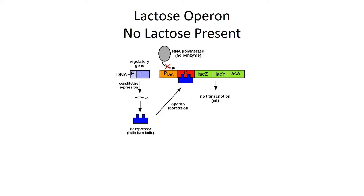Before we talk about the lac operon, let's review what an operon is. An operon is just a segment of DNA that has a regulatory gene that controls transcription and translation of some structural genes. In the lac operon, the regulatory gene is I, and it is transcribed and translated all the time — we are constantly reproducing a repressor protein.